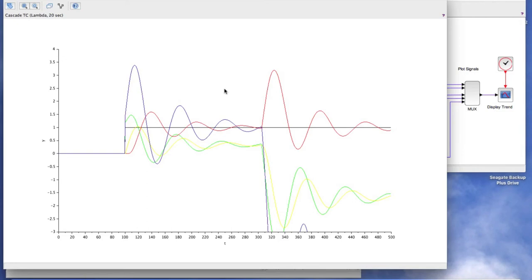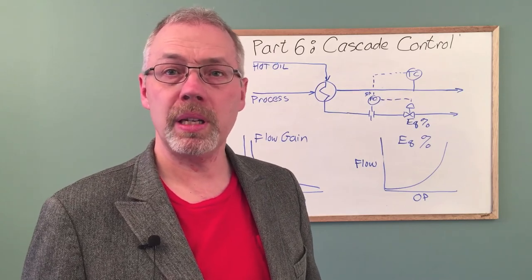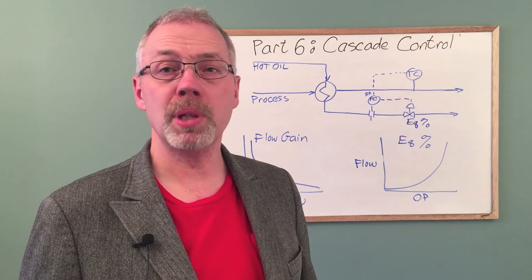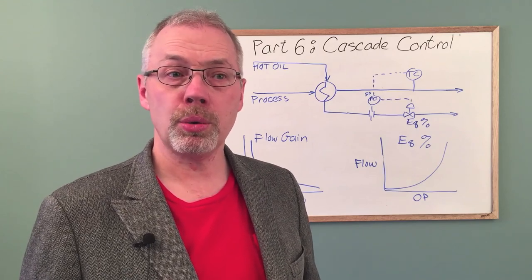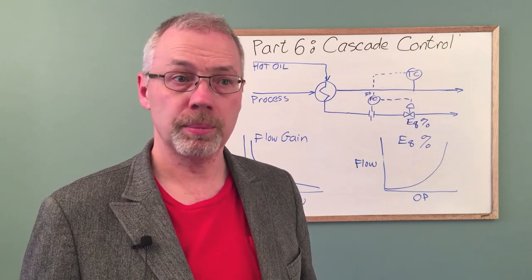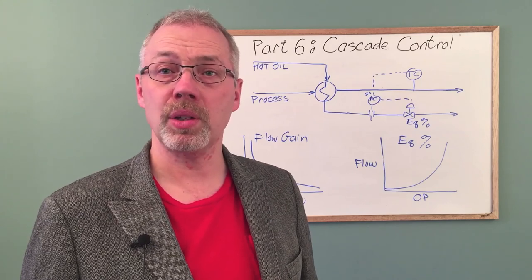We see that a temperature flow cascade for heat exchanger control, where an equal percent valve is used, becomes unstable at low flow rates. This is because the two controllers respond in similar times and begin to fight with each other. This is an example of an inappropriate use of a cascade control loop.